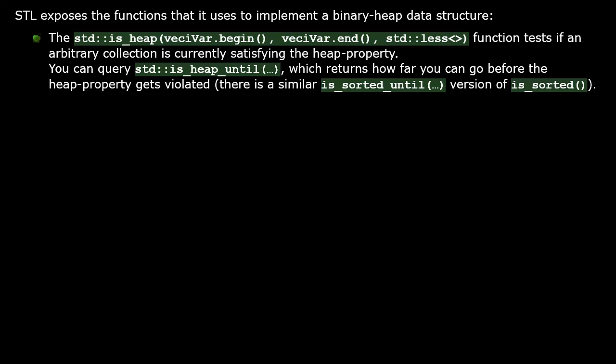STL exposes functions for binary heap data structure. The is_heap function tests if some arbitrary collection is currently satisfying the heap property. You can query is_heap_until which returns how far you can go before the heap property gets violated.